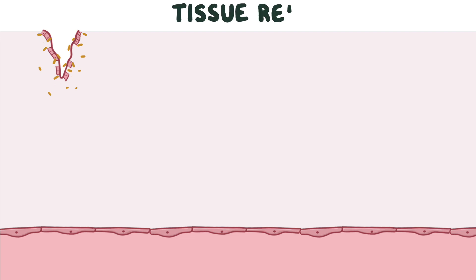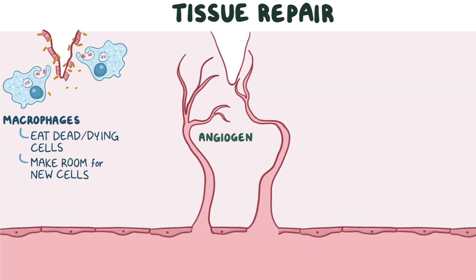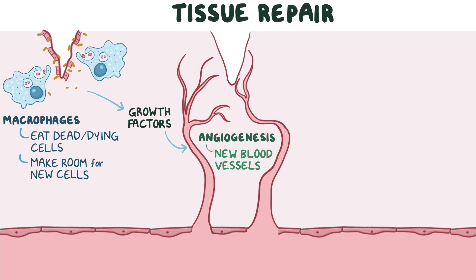The inflammatory response ends with tissue repair. Macrophages are recruited to eat up dead and dying cells, making room for new cells. This is followed by angiogenesis — the formation of new blood vessels — triggered by growth factors released by macrophages. These newly formed blood vessels are temporary, meaning that once the wound is healed, these new vessels regress.